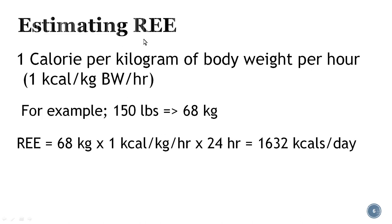We can estimate resting energy expenditure with a simple rough formula: we assume we spend one kilocalorie per kilogram of body weight per hour. For example, if you weigh 150 pounds, divide by 2.2 to get 68 kilograms, then multiply by 24 hours to get roughly 1,632 kilocalories per day as an estimation of that person's resting energy expenditure.